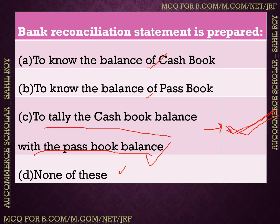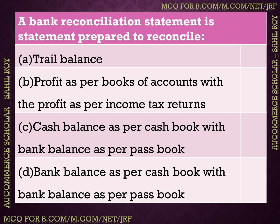Next question: a bank reconciliation statement is a statement prepared to reconcile — options: (A) trial balance, (B) profit as per books with profit as per income tax returns, (C) cash balance as per cash book with bank balance as per passbook, (D) bank balance as per cash book with bank balance as per passbook. The correct answer is option D — to reconcile bank balance as per cash book with bank balance as per passbook.